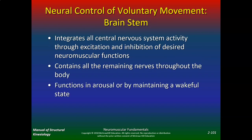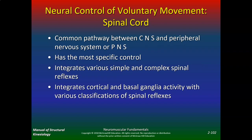The brainstem is very important — it integrates all central nervous activity through excitation and inhibition of desired neuromuscular functions, contains remaining nerve pathways, and functions in arousal by maintaining a wakeful state. The spinal cord is the common pathway between the central nervous system and peripheral control, providing the most specific control. It tells you to pick up a pen or curl your toes. It integrates various simple and complex spinal reflexes. An injury just to the spinal cord might mean you can still function but may lose some fine motor control.